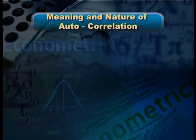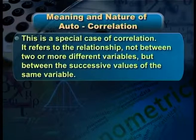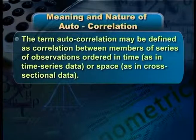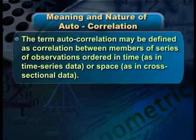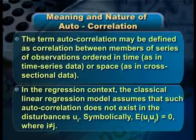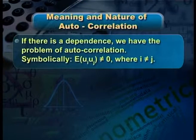Now I would like to take up the meaning and nature of the problem of autocorrelation. The problem of autocorrelation is a special case of correlation. It refers to the relationship not between two or more different variables, but between the successive values of the same variable. The term autocorrelation may be defined as correlation between members of a series of observations ordered as in time series data or space as in cross-section data. The classical linear regression model assumes that autocorrelation does not exist in the disturbances ui. Symbolically, we can say that E(ui, uj) = 0, where i ≠ j. If there is a dependence between the two random terms, we can come across the problem of autocorrelation.